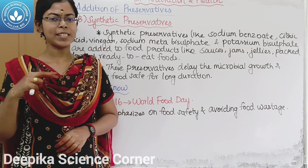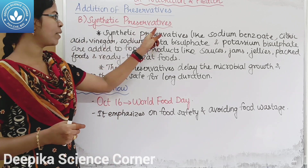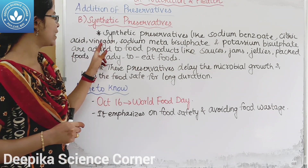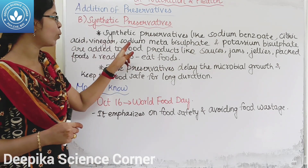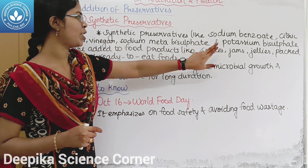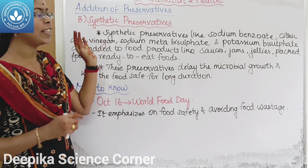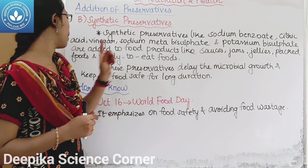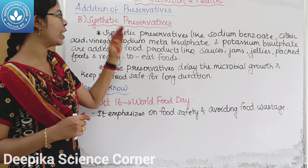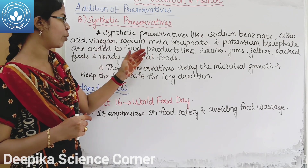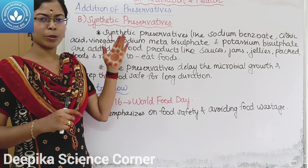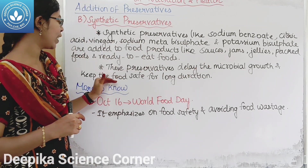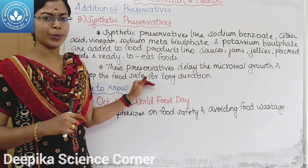The second type is synthetic preservatives, including sodium benzoate, citric acid, vinegar, sodium metabisulfite, and potassium bisulfite. These are added to food products such as jams, jellies, packed foods, and ready-to-eat foods. Synthetic preservatives delay microbial growth and keep food safe for a longer duration.